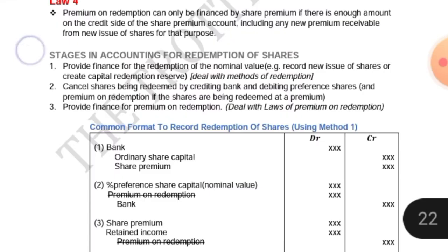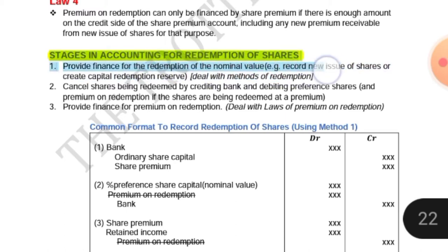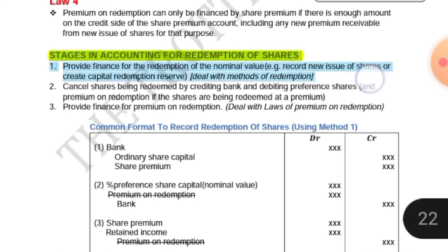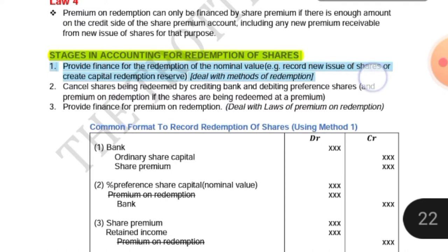Now we move on to stages in accounting for redemption of shares. Stage number one is to provide finance for the redemption of nominal value — for example, record new issues of shares or create a capital redemption reserve. In other words, we are dealing with the methods of redemption.